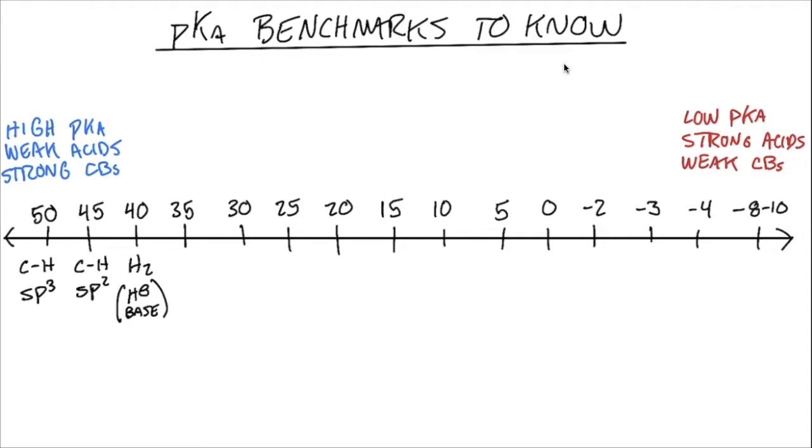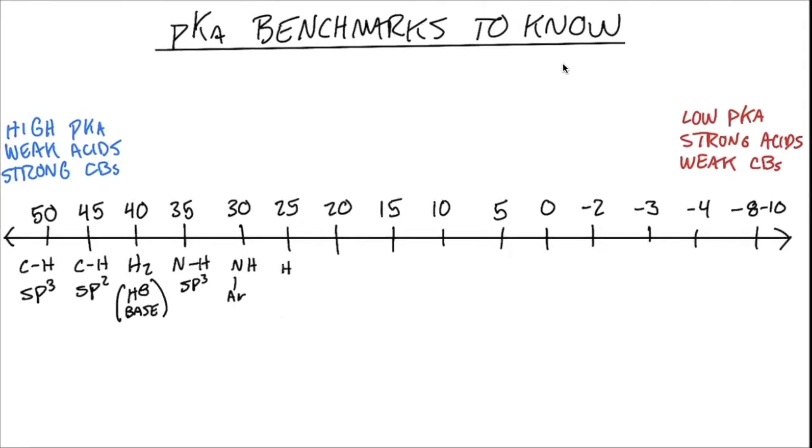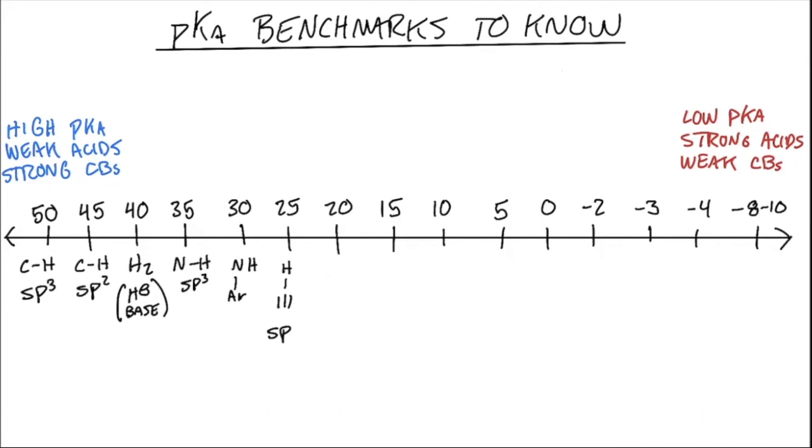Moving right along, around 35, you'll have NH protons that are SP3 hybridized and don't have too many other stabilizing factors. At 30, you'll have NH protons that are adjacent to some kind of aromatic system or have more conjugation available to them. That's going to increase their acidity. At 25, we have CH protons that are SP hybridized. So again, increasing S character, increasing acidity. At 20, we have CH protons that show up alpha to a carbonyl. Resonance there increases the acidity of those SP3 hybridized protons.